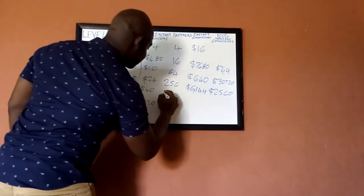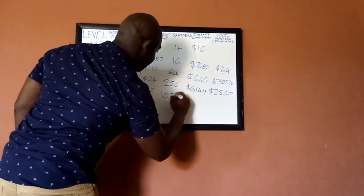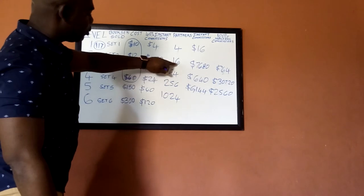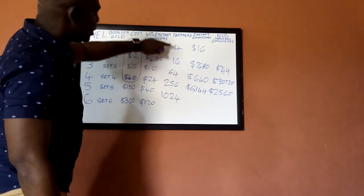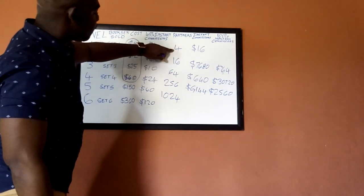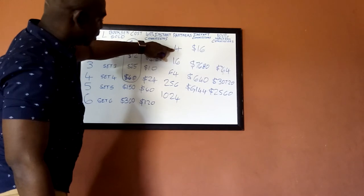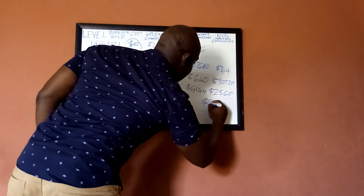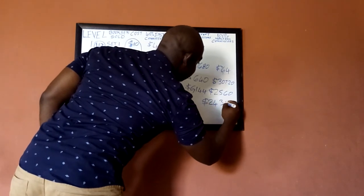And the third set would hit your people, so you get a matching commission of $2,560.